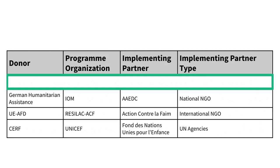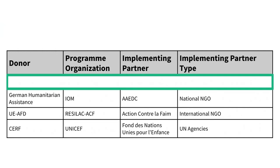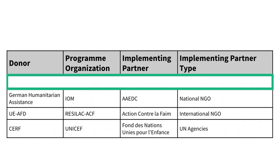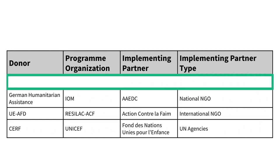The first column contains data on the name of the donor organization. To describe this column using HXL, you could use hashtag org plus funder, or hashtag org plus funder plus name if you want to be clear that the column contains the donor organization's name. Both are correct.